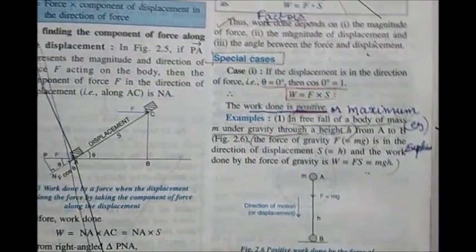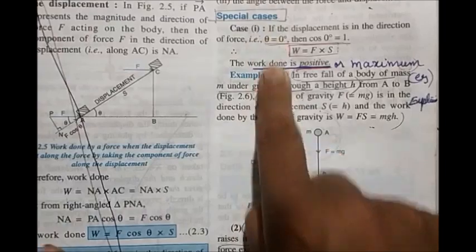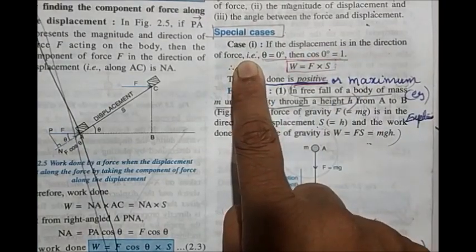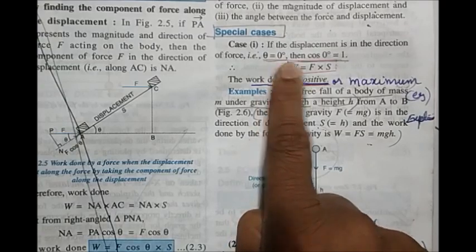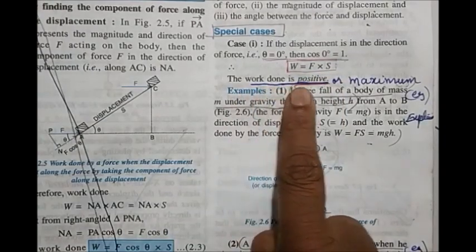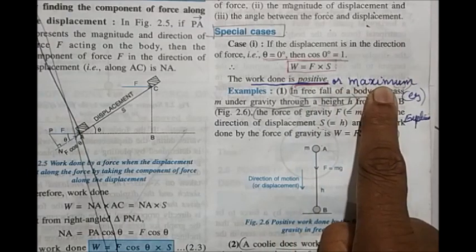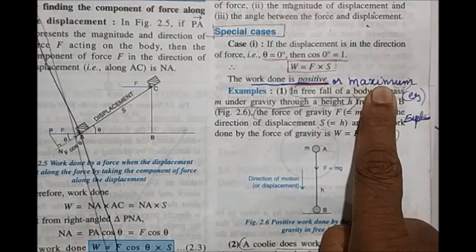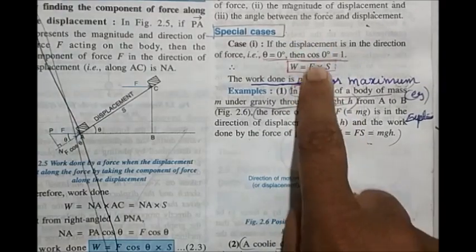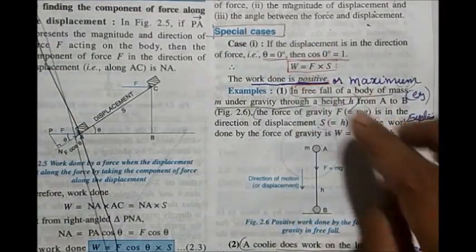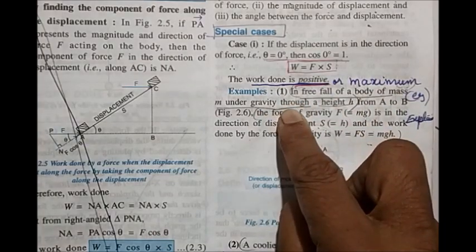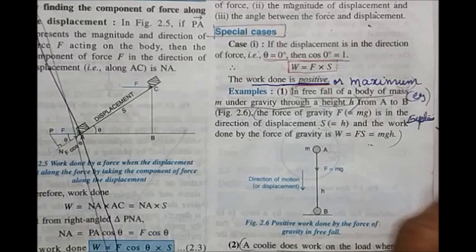Then come to factors affecting work done. The special cases are very important — definitely one question comes from this. Case 1: if displacement is in the direction of force, θ = 0, cos0 = 1, so the formula becomes W = F × s. Work done is positive, also called maximum. Questions can ask when is work done maximum or when is work done positive.